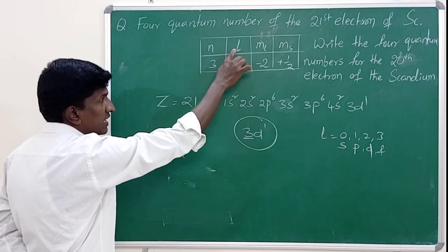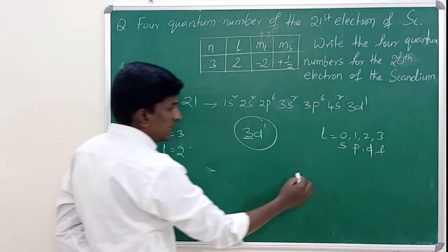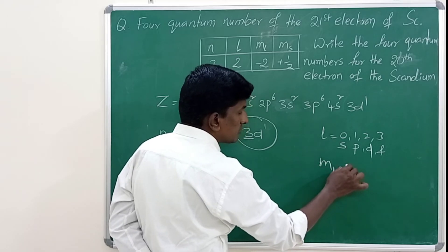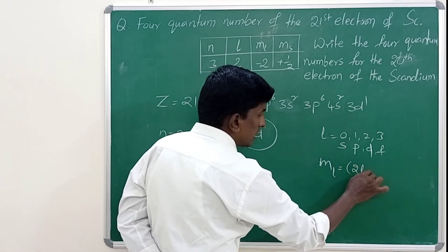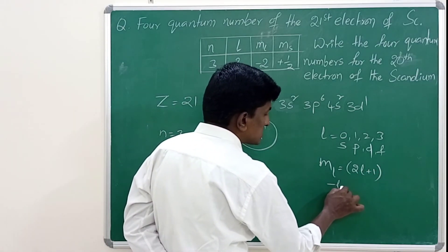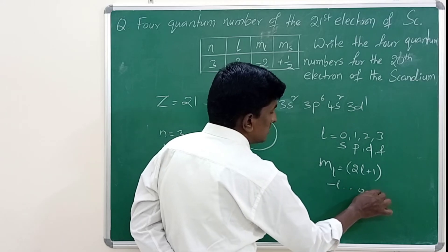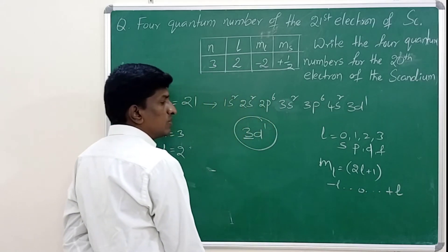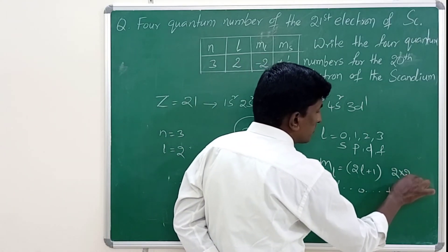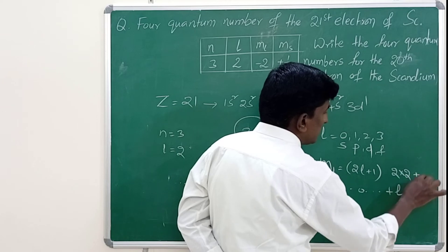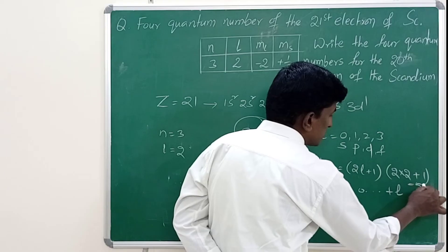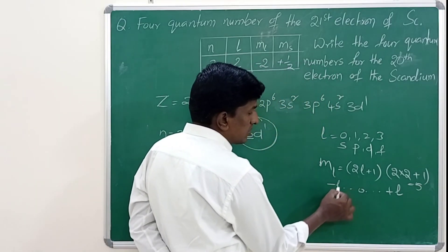The magnetic quantum number depends on the angular momentum quantum number. For any given angular momentum quantum number, the total number of magnetic quantum numbers is 2l + 1, and these values start from −l up to +l. Here l = 2, so there are 2×2 + 1 = 5 values for the d orbital.